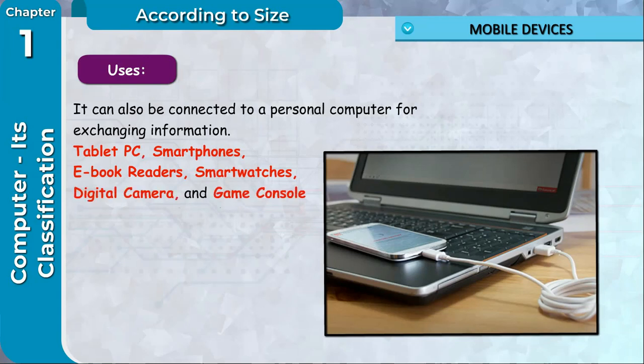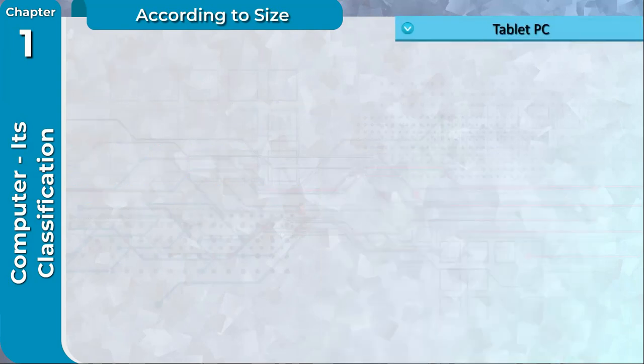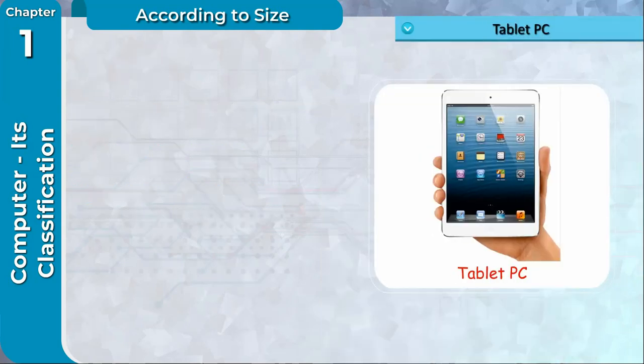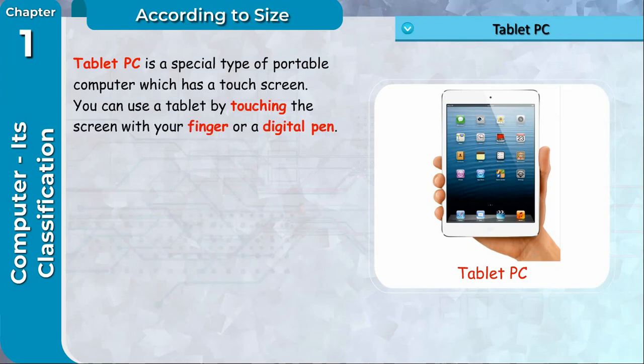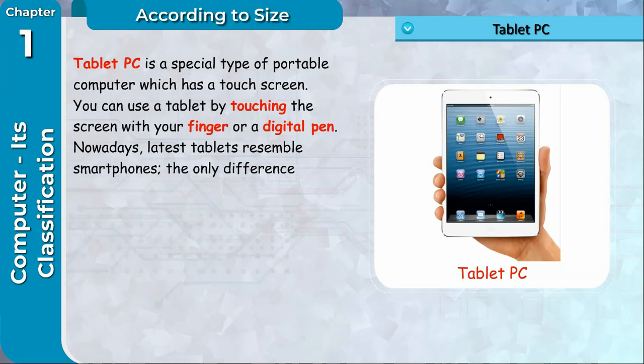Tablet PC: Tablet PC is a special type of portable computer which has a touch screen. You can use a tablet by touching the screen with your finger or a digital pen. Nowadays latest tablets resemble smartphones. The only difference is that they are larger than smartphones.